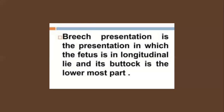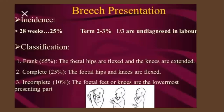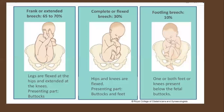Breech presentation is the presentation in which the fetus is in longitudinal lie and its buttocks is the lowermost part. The incidence is 25% at 28 weeks, reducing to 3% at term, and one third of breech presentations are undiagnosed at term. You classify breech as frank breech, complete breech, and incomplete breech.